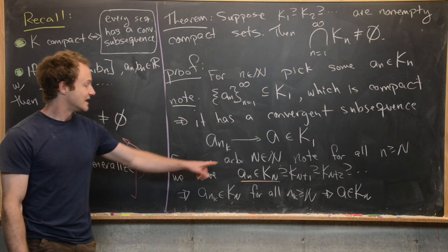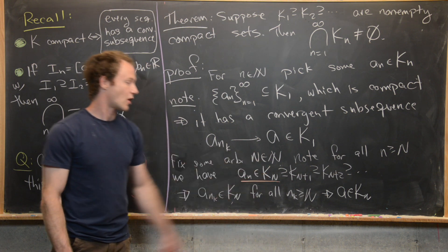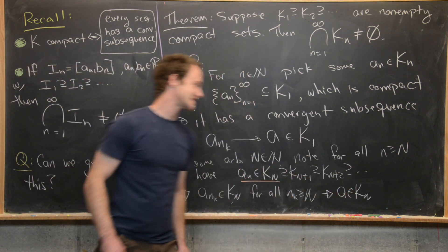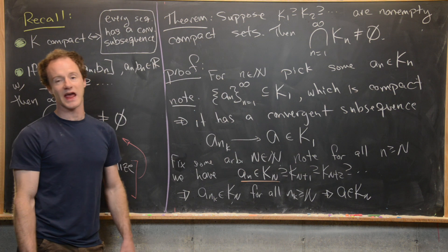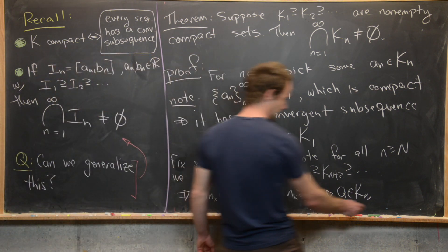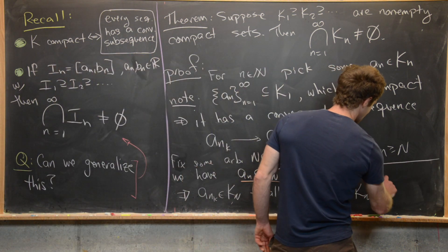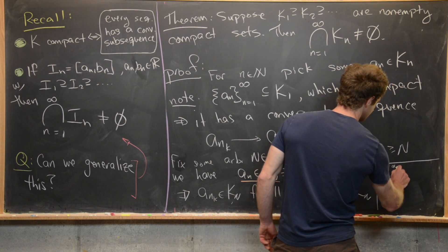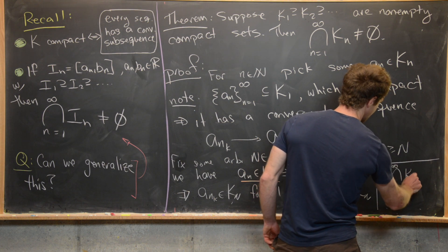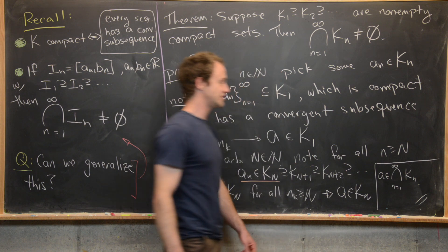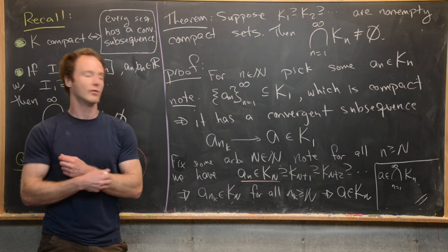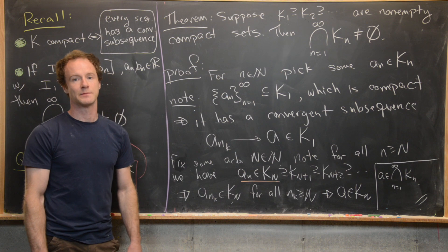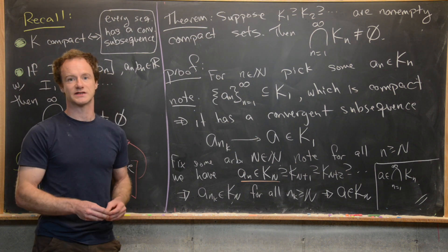So a is inside K_N. Since N was arbitrary, we know that a is in fact inside K_n for all n. That means a is inside the intersection as n goes from 1 to infinity of K_n, which is exactly what we needed to show in order to prove that this intersection is non-empty. And that's a good place to stop.